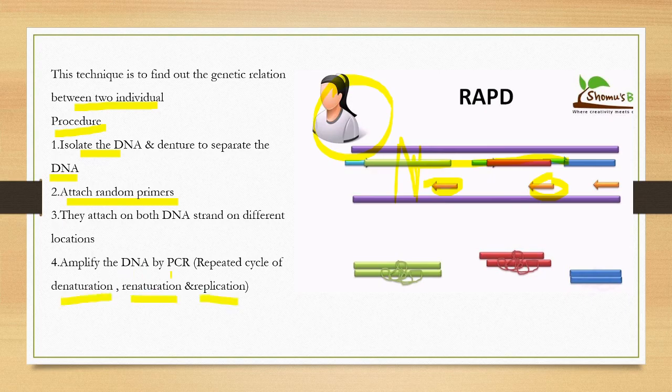The DNA is amplified by PCR — Polymerase Chain Reaction. PCR is a process involving repeated cycles of denaturation, where DNA strands are separated; renaturation, where primers bind; and replication, where the DNA is multiplied.